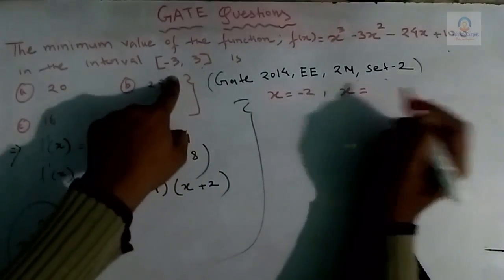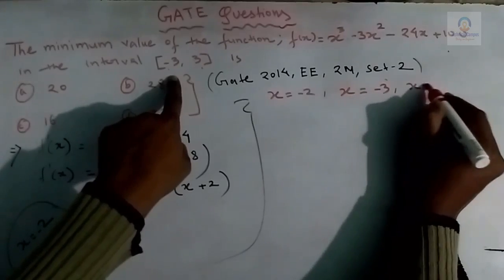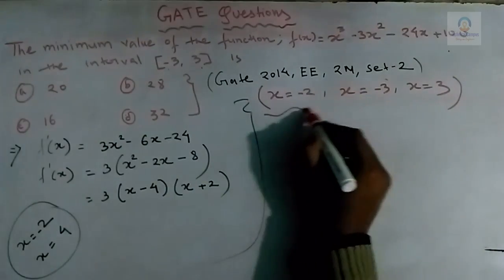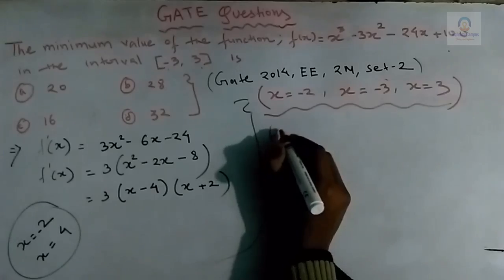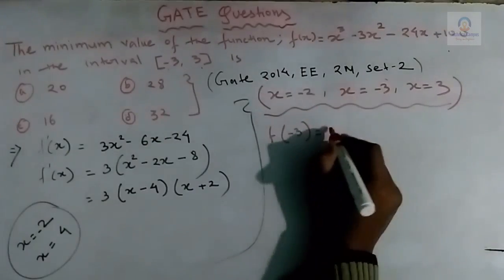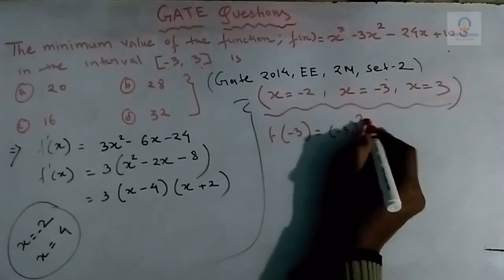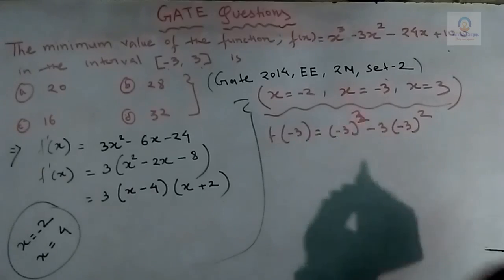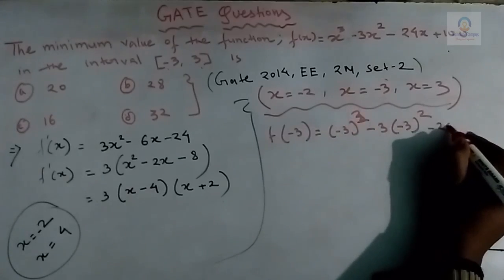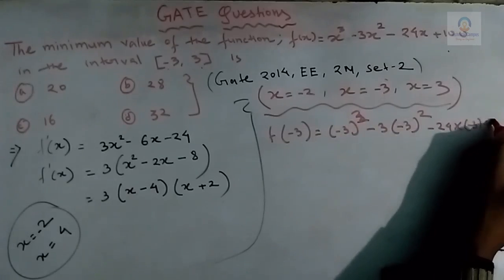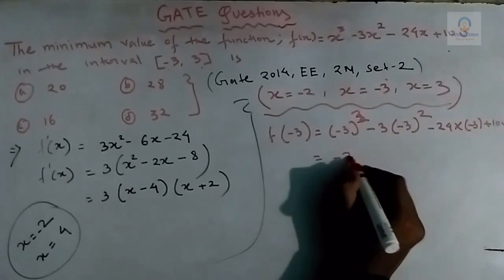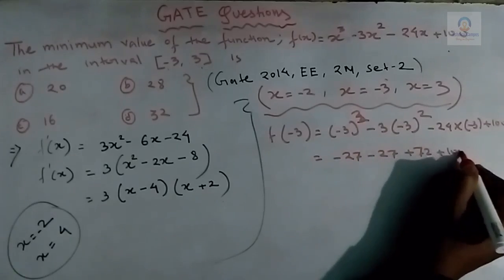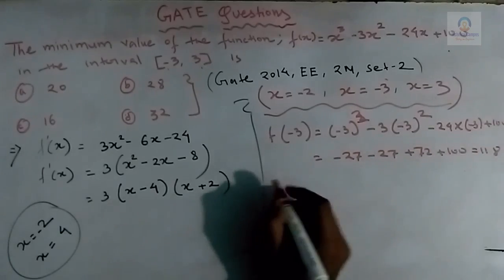We check the value of f(x) for x = -2 and for the endpoints x = -3 and x = 3. Putting x = -3: (-3)³ - 3(-3)² - 24(-3) + 100 = -27 - 27 + 72 + 100 = 118.